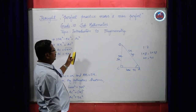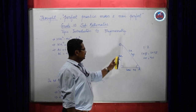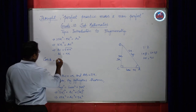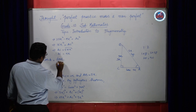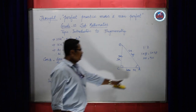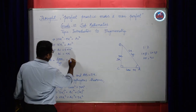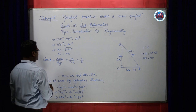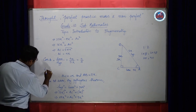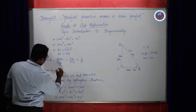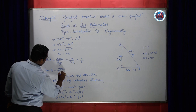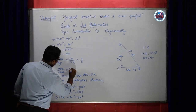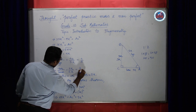Now you can find the required values. It is asked to find cos A: use your formula — base by hypotenuse. The base is 4K and hypotenuse is 5K, so cos A equals 4K by 5K, and cancelling K gives 4 by 5. Then it is asked to find tan A: tan is defined as perpendicular by base. Perpendicular is 3K and base is 4K, so it is 3K by 4K, which gives 3 by 4.